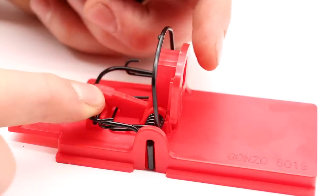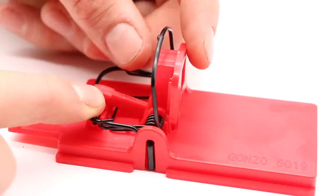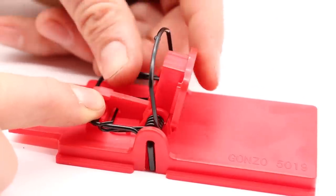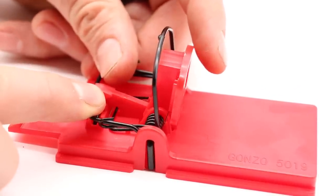So to catch mice, I like to make this a hair trigger by holding down the bar and pushing it right to the edge where it releases. See right there? That way the slightest touch by the mouse will get caught. Otherwise they'll just lick the peanut butter and get a free meal.